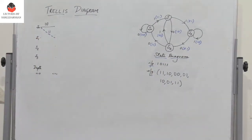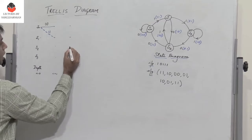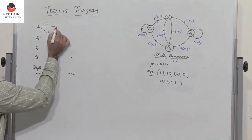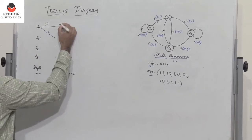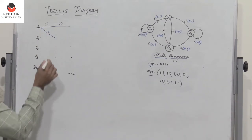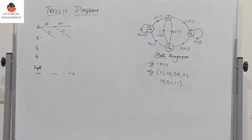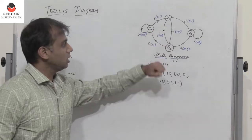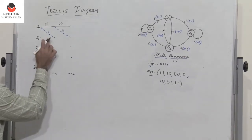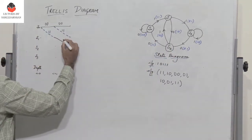After the first stage, I am here at depth 1. For i equal to 2, again if I am at s0 and the input is 0, I remain at s0 with output 0,0. And if I get a 1, I go to state s1 with output 1,1, indicated by a dashed blue line. Now if I am in state s1 and the input is 0, I go to s2 — indicated by a solid line — with output 1,0.